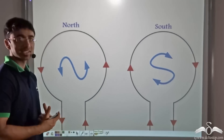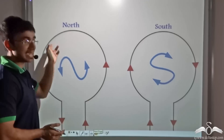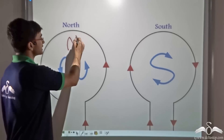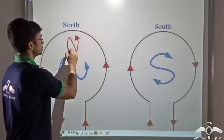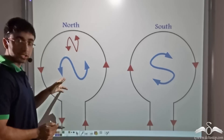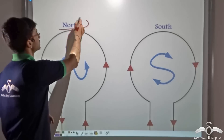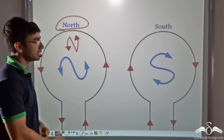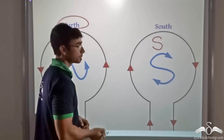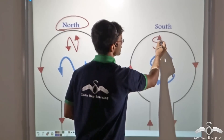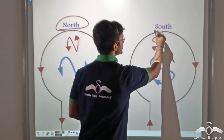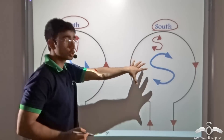This can be visualized in a much simpler manner. When current flows in the anti-clockwise direction, consider the letter N. Place arrows at both ends of N to indicate the anti-clockwise direction — since this indicates anti-clockwise, N stands for north, representing the north pole. Similarly, when current flows in the clockwise direction, consider the letter S. Draw two arrows at both ends of S pointing outward — these depict the clockwise direction, and S stands for south, indicating the south pole of the current carrying loop.